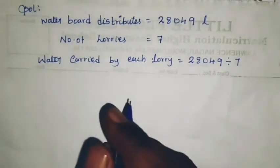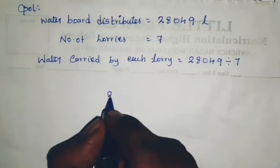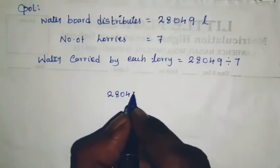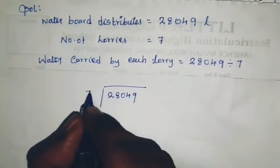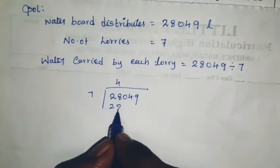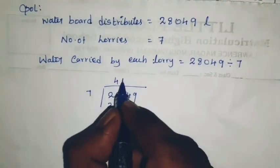So 28,049 divided by 7. 28 is divisible, so we get 4. Then zero, zero.